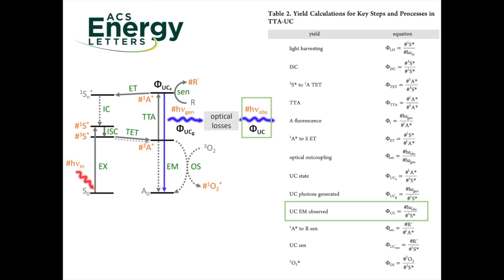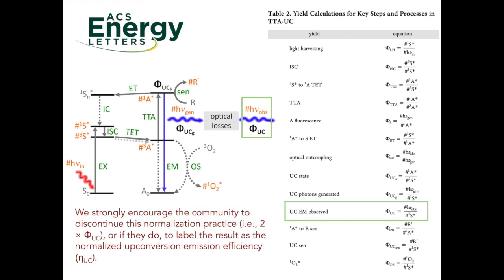Instead of multiplying by 2 or normalized to 1.0 or 100 percent, and given the traditional and IUPAC definition of quantum yield,